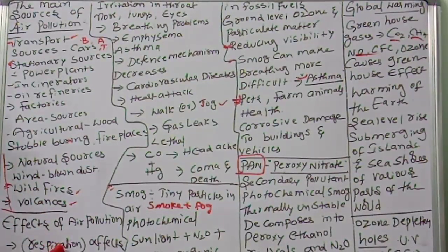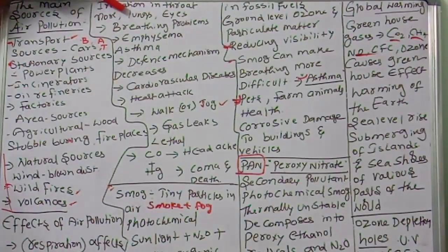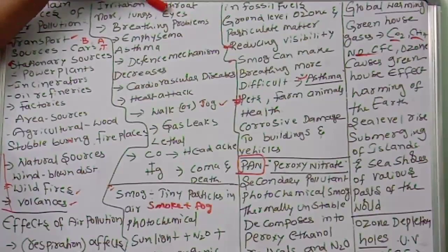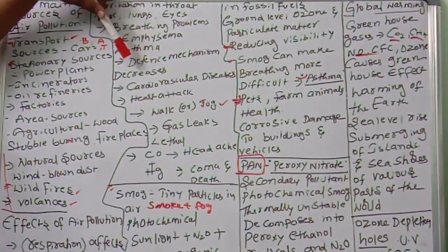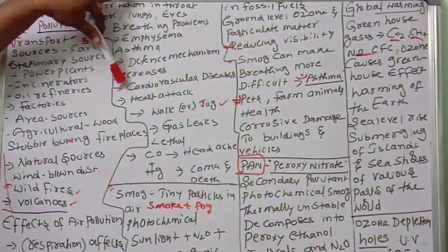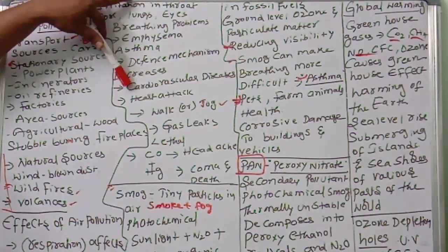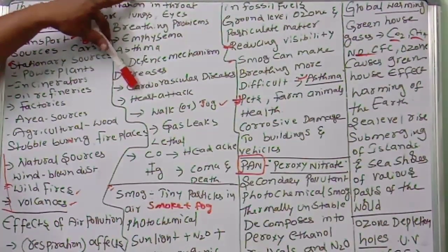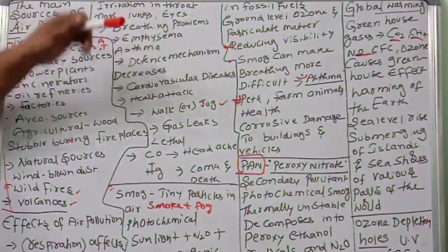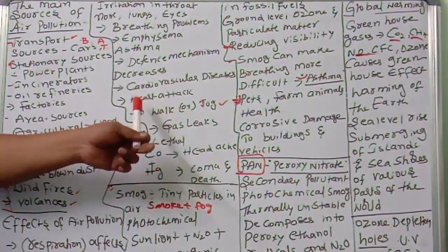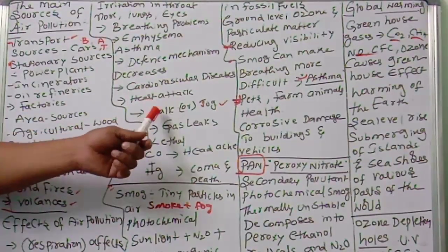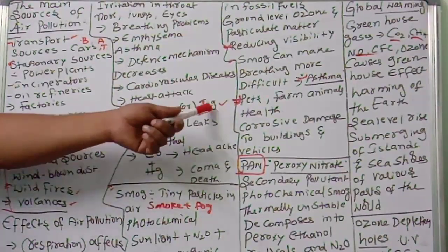The effects of air pollution: we depend on the atmosphere for respiration, so when it is polluted we get breathing problems, irritation in the throat, nose, lungs, and eyes, and conditions like emphysema and asthma. Even our immune system is weakened. Particulate matter accumulates in arteries, disturbing blood supply and leading to cardiovascular diseases and heart attack. People in polluted areas should prefer walking or jogging over intense exercise.